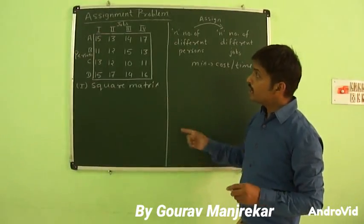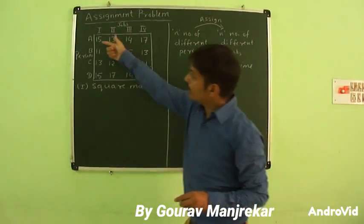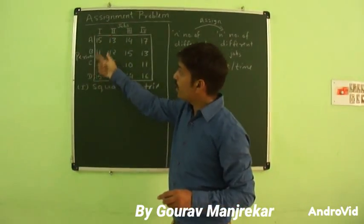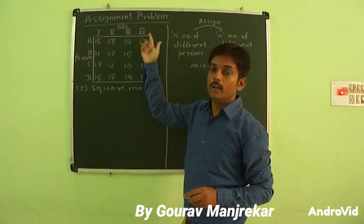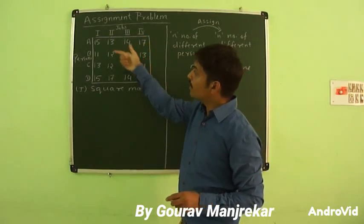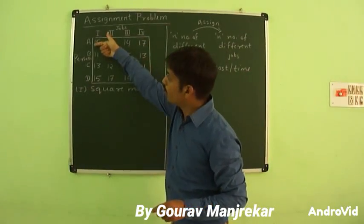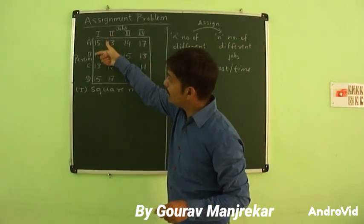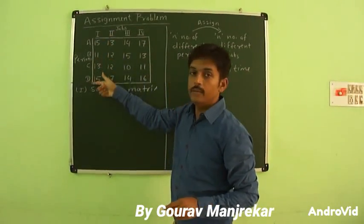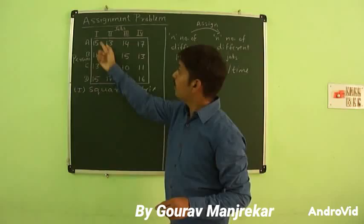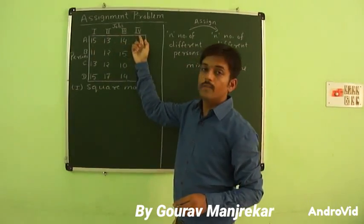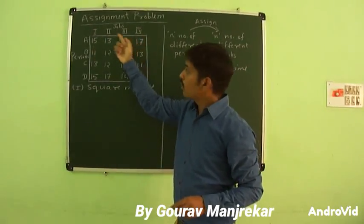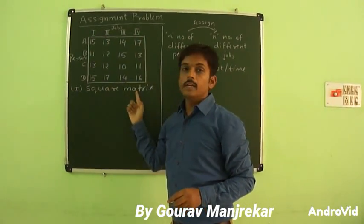A square matrix is one where the number of rows and number of columns are equal. In our example we have 4 rows — A, B, C and D — and 4 columns — 1st, 2nd, 3rd and 4th — so our matrix is square.